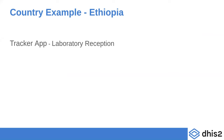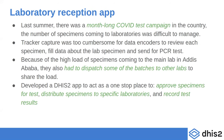In Ethiopia, Tracker is being used to collect COVID test results, tracking each individual suspect from specimen collection through cases, treatments, and up to the discharge stage. Before COVID, DHIS2 was used for aggregate reporting. When COVID started and the WHO package was released by Oslo, Ethiopia integrated the WHO COVID package and made customizations.